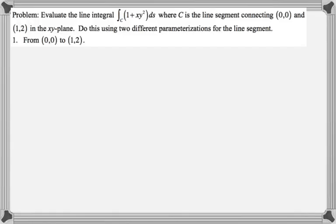Okay, in this video we are going to do a scalar line integral along a line segment going in two different directions. First from (0,0) to (1,2), and then from (1,2) to (0,0). So let's go through the process and see what we get.